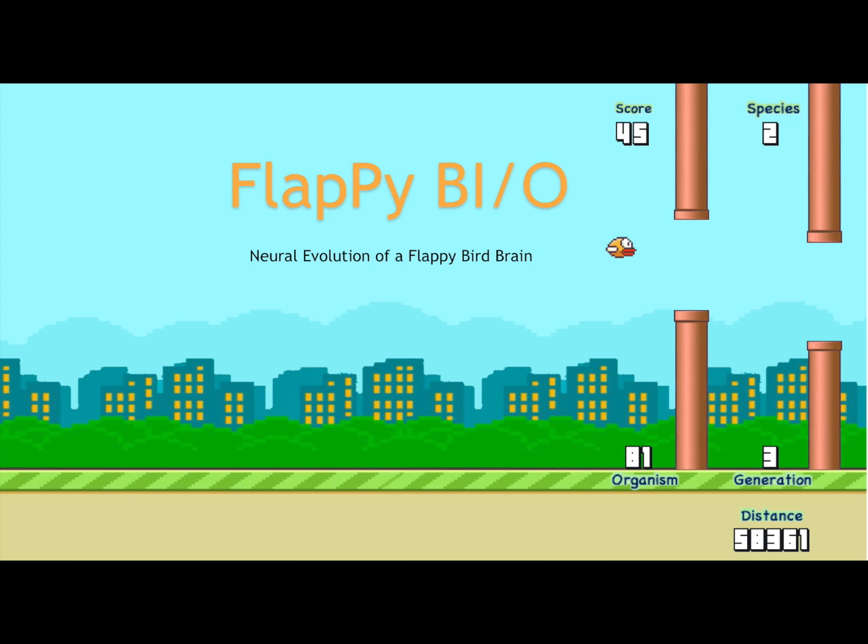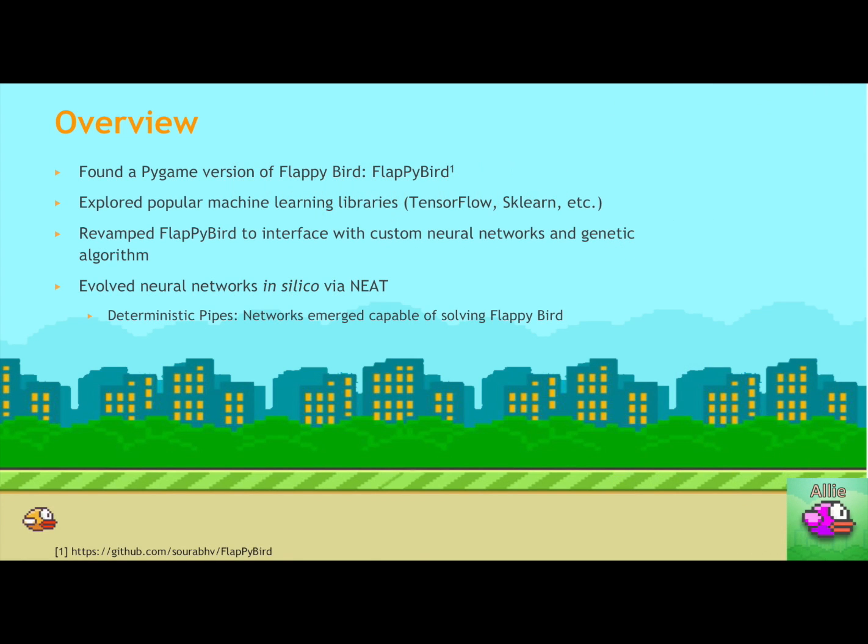Our machine learning project involves implementing a genetic algorithm to evolve neural nets to solve Flappy Bird. So a quick overview of what we did. We found a Pygame version of Flappy Bird. We explored some popular machine learning neural network libraries such as TensorFlow, sklearn, but instead we decided to implement our own custom neural nets and we implemented a genetic algorithm as well. The genetic algorithm was called NEAT and we'll talk about that in a bit.